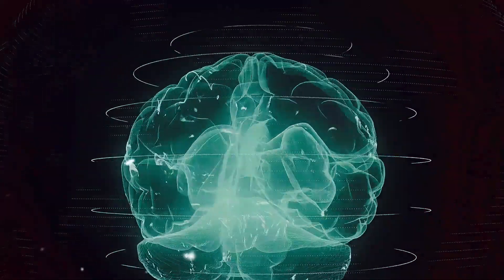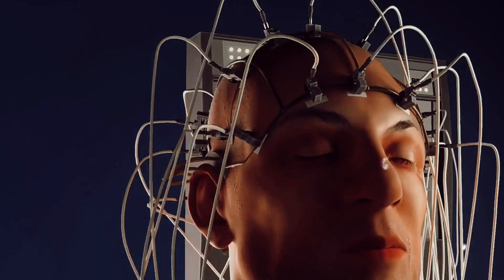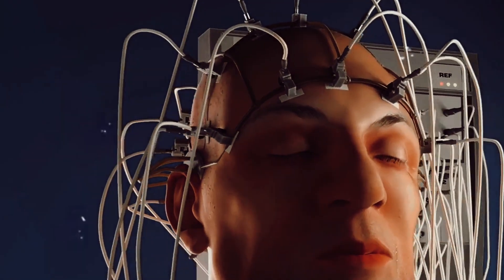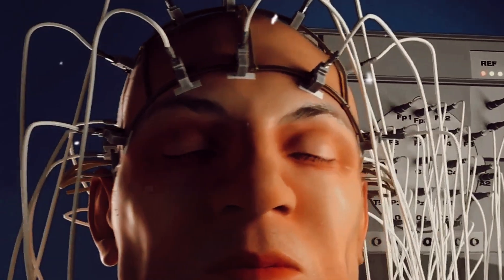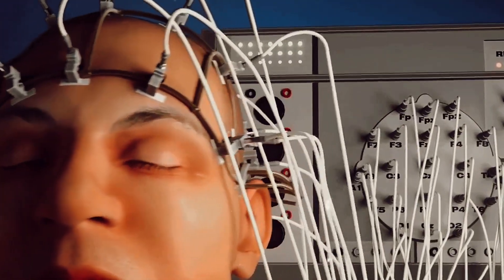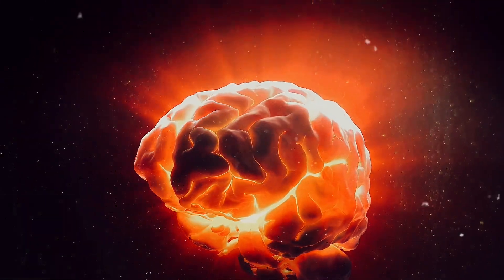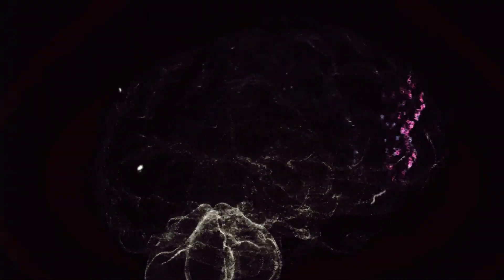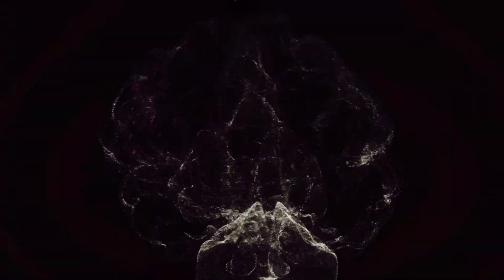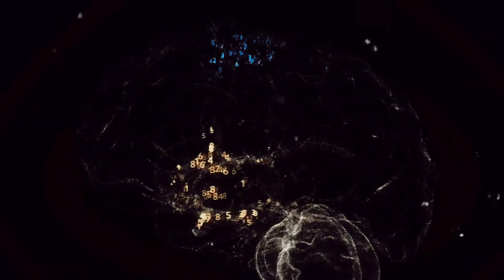First, we need to understand what happens when the brain dies. In essence, brain death is the complete and irreversible cessation of all brain function, including the involuntary activity necessary to sustain life. It's like the master switch controlling the machinery of the body has been flipped off permanently. Brain death is not a temporary state like a coma.